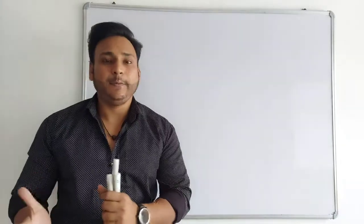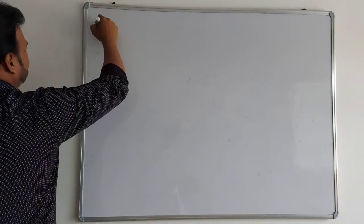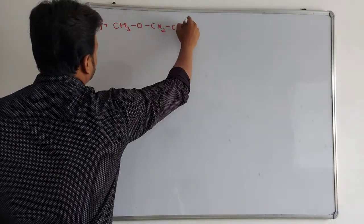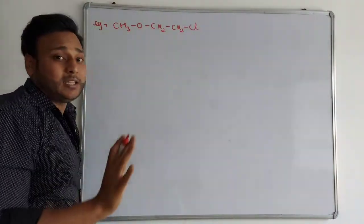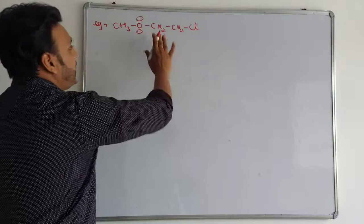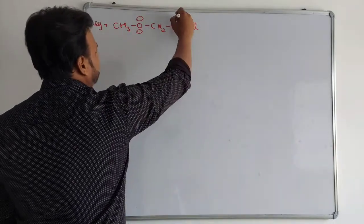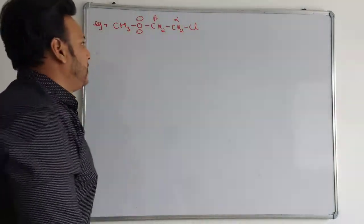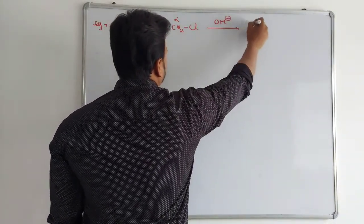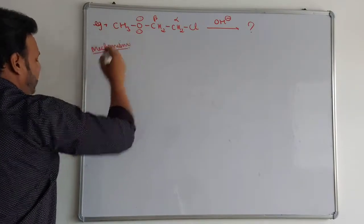Now let's talk about the mechanism of NGP. Let me take an example: CH3-O-CH2-CH2-Cl. The condition for NGP is that a heteroatom with a lone pair of electrons must be present at the beta, gamma, delta, or further positions. Here, oxygen is at the beta position. Let's look at this reaction with its mechanism.